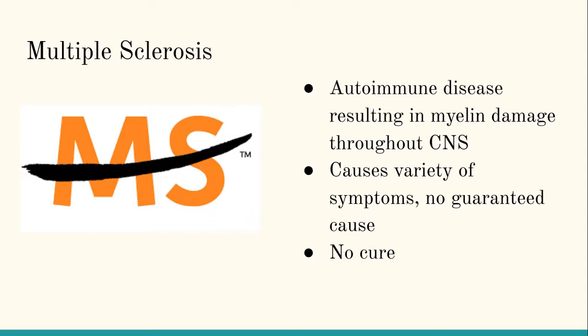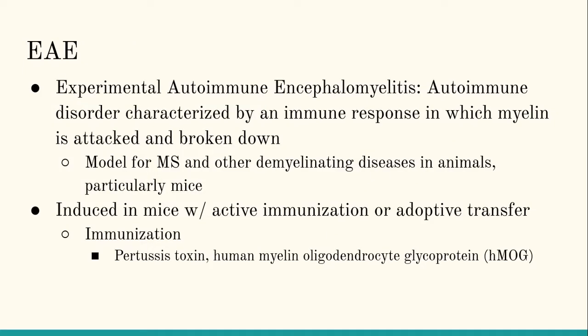There's currently no cure for the disease, so research being done is to develop therapeutics and understand the pathways behind the disease. A lot of this research is done through EAE — experimental autoimmune encephalomyelitis — which is an autoimmune disorder characterized by an immune response where myelin is attacked and broken down. This has been a model for MS research in animals for decades, and specifically mice are used most often.